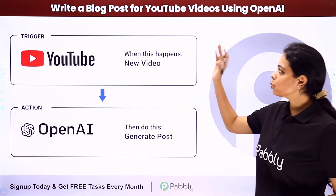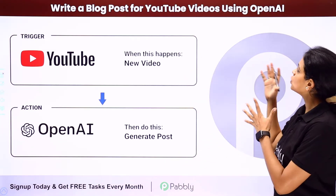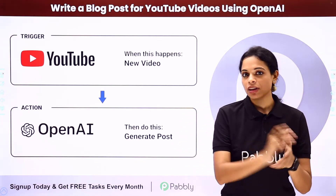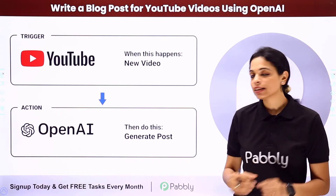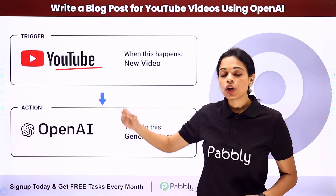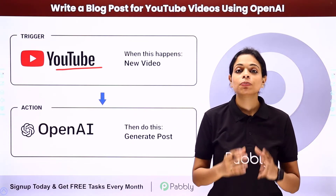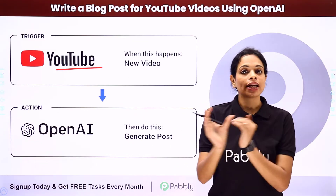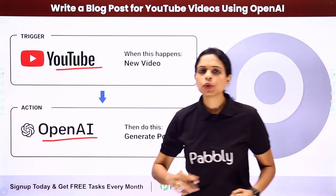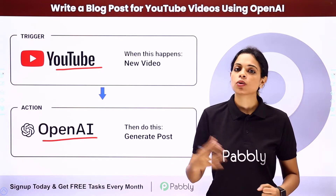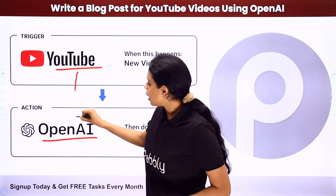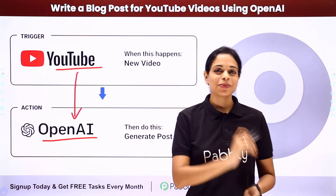In this video, we are going to see how to write a blog post for YouTube videos using OpenAI. OpenAI is an artificial intelligence research and development company. Every time a new video is uploaded on YouTube, you want a description or a blog to be added according to the title of that video, which you can get extracted through OpenAI and further share on Google Sheets, Excel, or any other platform. For this, you will have to integrate these two applications, which can be done using Pabbly Connect software.